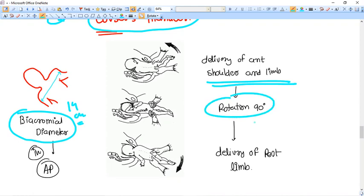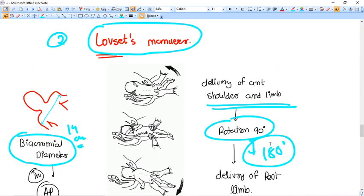Then you do 180 degree rotation and you get the posterior shoulder to the anterior shoulder. Okay, what you are doing, simply I am telling you, you get the biacromial diameter of the fetus into the AP diameter first of all. Then you extract the anterior shoulder. Then you rotate the baby 180 degree, so that the posterior shoulder which is inside the uterus comes out and comes anteriorly. So then you can easily get it out. This is how you do the Lovset's maneuver.